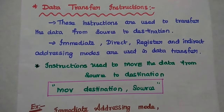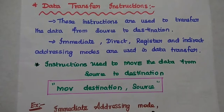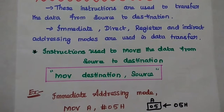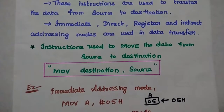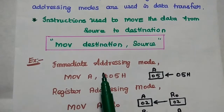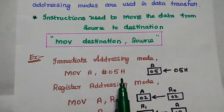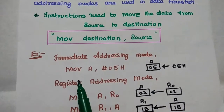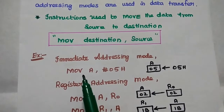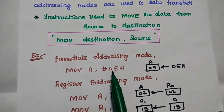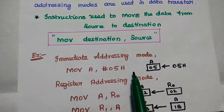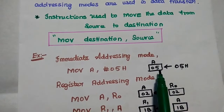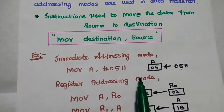The first instruction is the MOV instruction. This instruction is used to move the data from source to destination. For immediate addressing mode, we can take this example: MOV A, #05H. That means we are going to move the immediate data 05 to this accumulator directly.